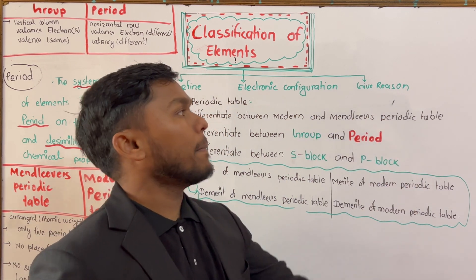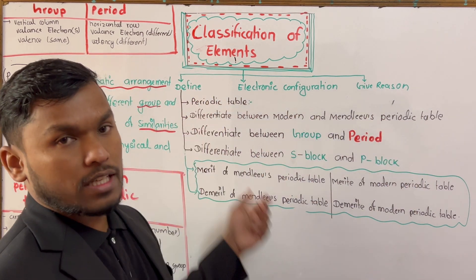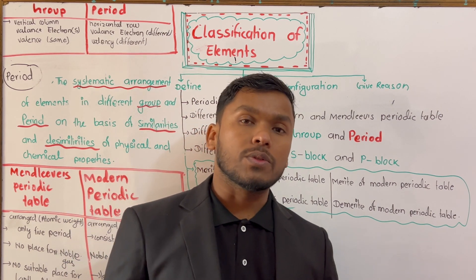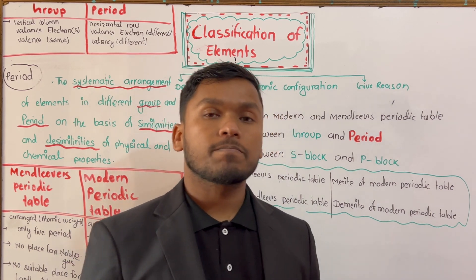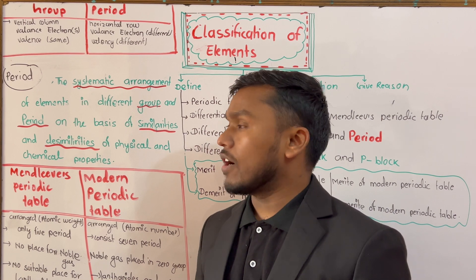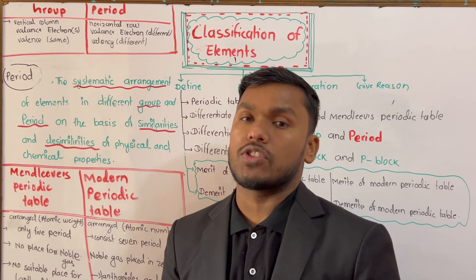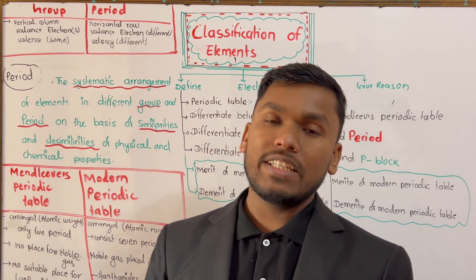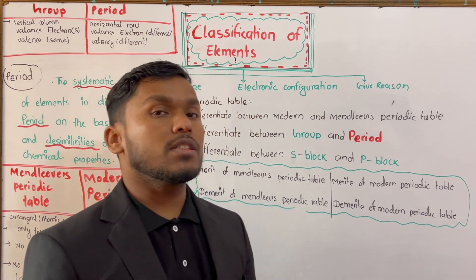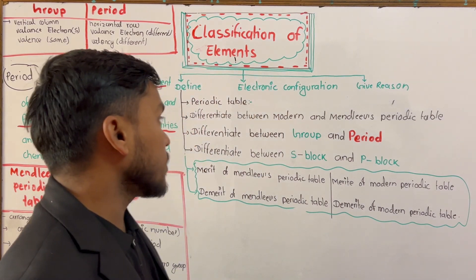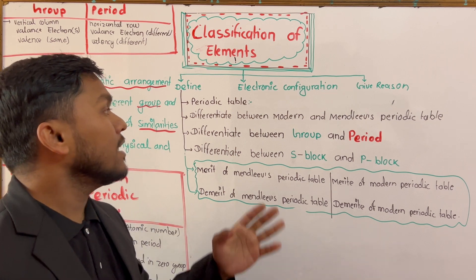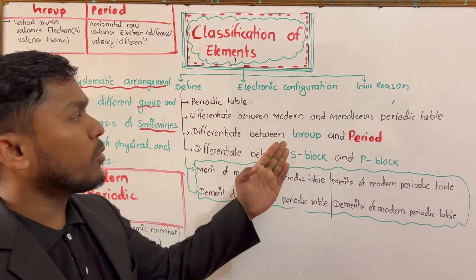So, please, what are we going to do in this chapter? First, we are going to make a definition — a definition of the periodic table. And then, the definition of the modern periodic table.